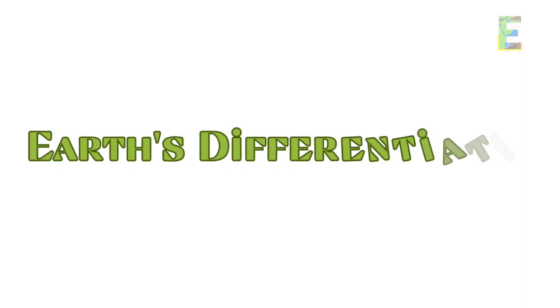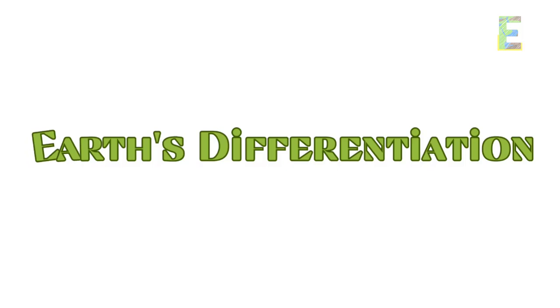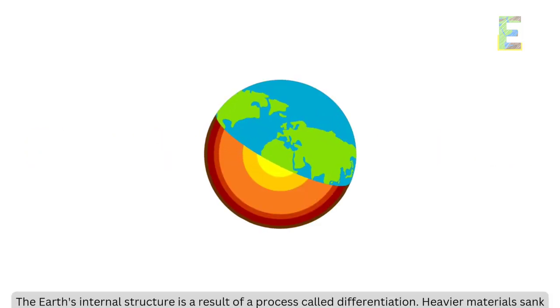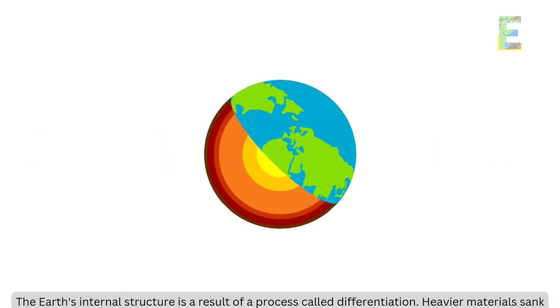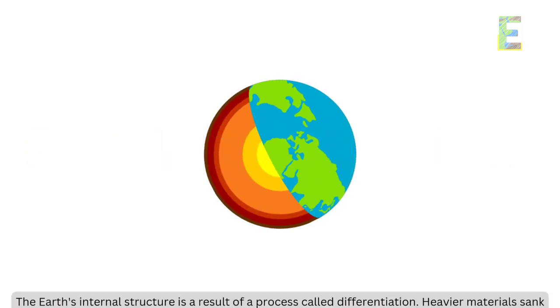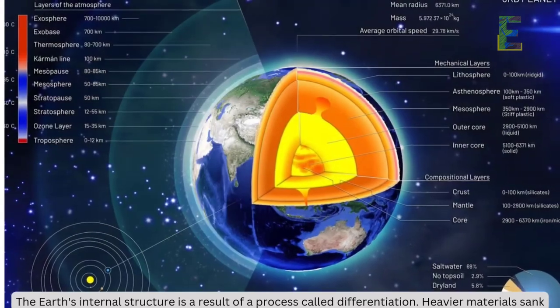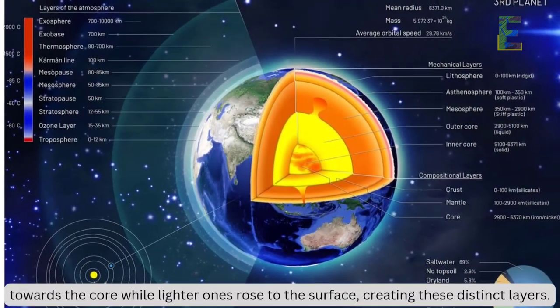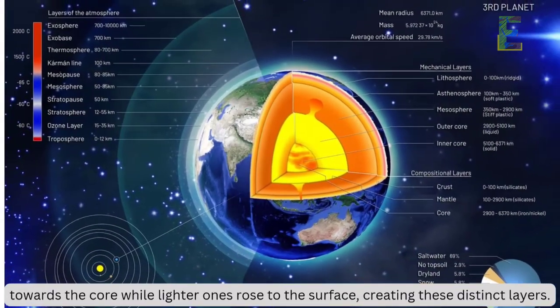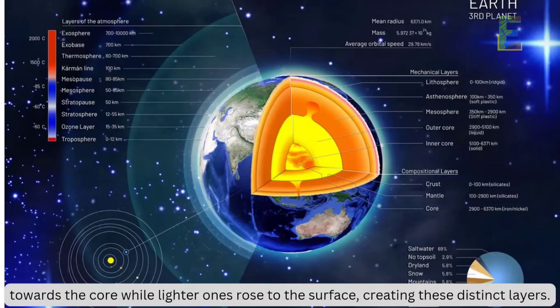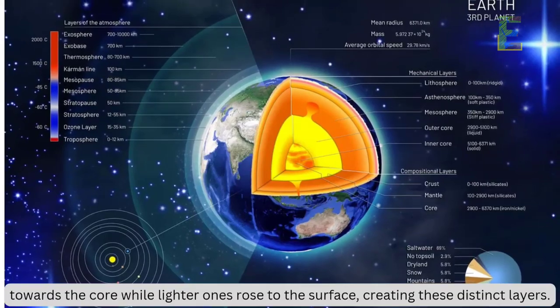Earth's differentiation: the Earth's internal structure is a result of a process called differentiation. Heavier materials sank towards the core while lighter ones rose to the surface, creating these distinct layers.